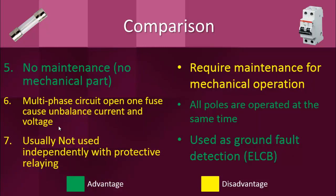Fuses only sense overcurrent or to a degree over-temperature, and cannot usually be used independently with protective relaying to provide more advanced protective functions — for example, ground fault detection. Whereas the circuit breaker can be used as a ground fault detection device; the most famous example is the Earth Leakage Circuit Breaker (ELCB).